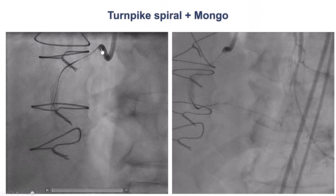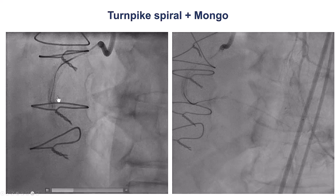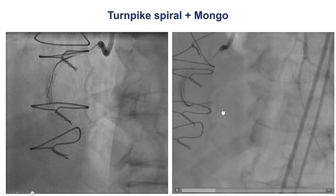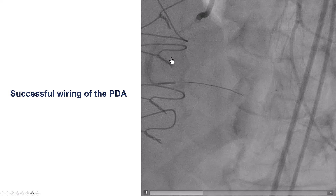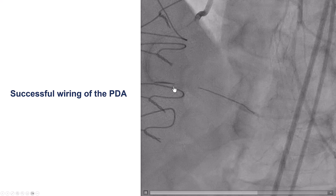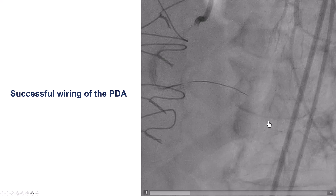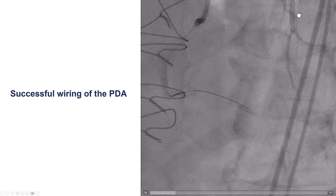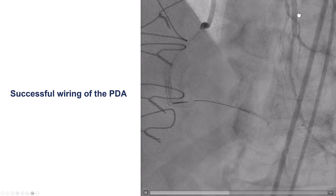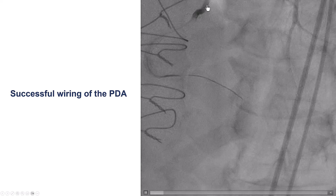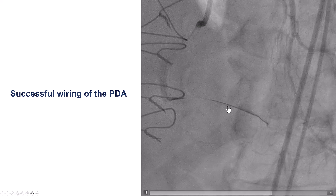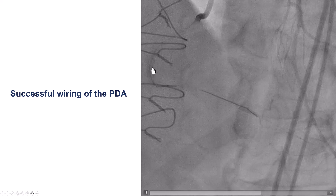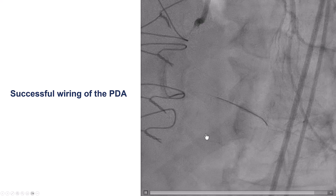We engaged with an Amplatz guide and attempted to cross using a Turnpike Spiral and the Mongo wire, making good progress. We were able to advance the Mongo wire into the right posterior descending artery, as confirmed with injection through the LIMA. So we had two guides — one in the right, one in the LIMA — and we successfully crossed the first CTO from proximal RCA to distal RCA.